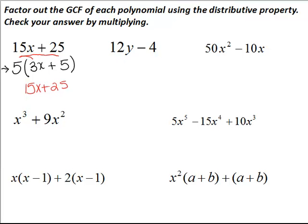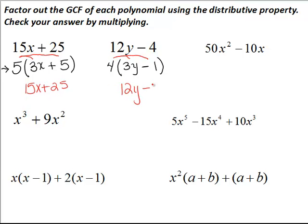Now looking at the next example, we have 12y minus 4. Again, y is only present in the first term, so we cannot factor out a y term. We look at 12 and 4 — the greatest common factor is 4. So I will pull out a 4: 4 times 3y gives me 12y, and factoring out a 4 from the 4 leaves me with minus 1. Distributing back in gives us 12y minus 4.